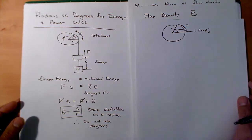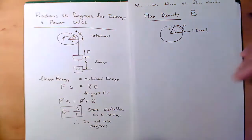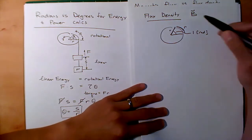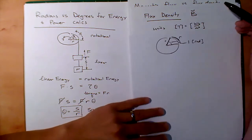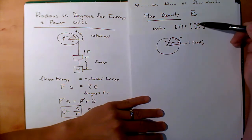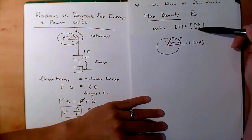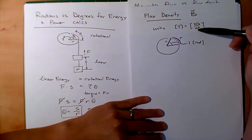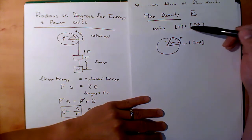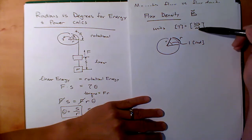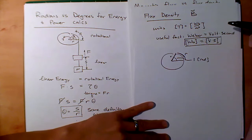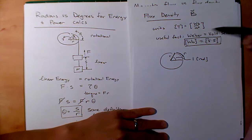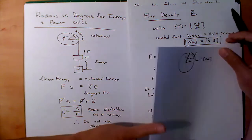Now let's move on to flux density — this is starting to become the meat of the course. Flux density B, notice the hat — it's a vector. The units are Tesla, or equivalently Weber per meter squared. A Tesla is flux per area. Another useful fact: a Weber is a volt-second. We'll see this later, but keep it in the back of your mind.